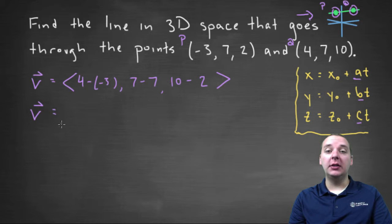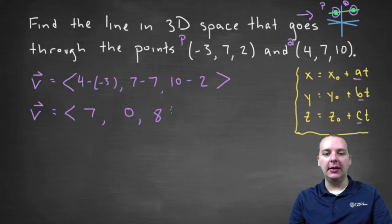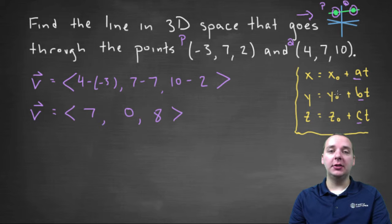So a direction vector for our line would be the vector seven, zero, eight. And so in our equation, our set of parametric equations for the line, the seven is like your A, the zero is like your B, and the eight is like your C.